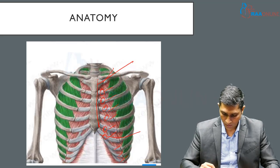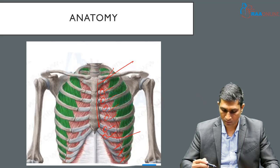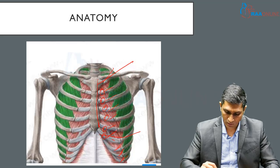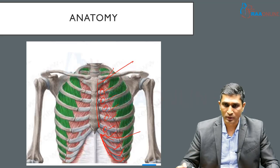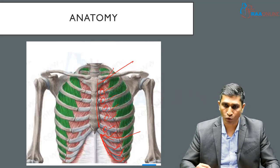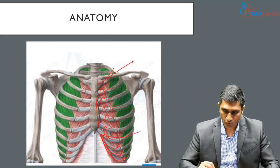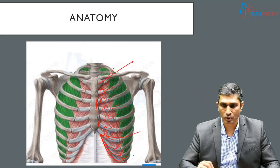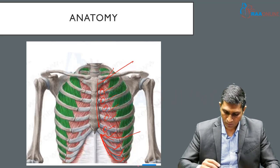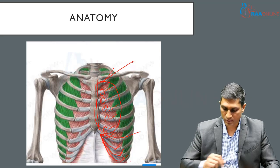Ribs 8, 9, and 10 are attached to the costal cartilage of the seventh rib — you can notice that each is attached here — and that is why these are called false ribs. Of the false ribs, the 11th and 12th ribs are also called false ribs and are additionally termed as floating ribs.